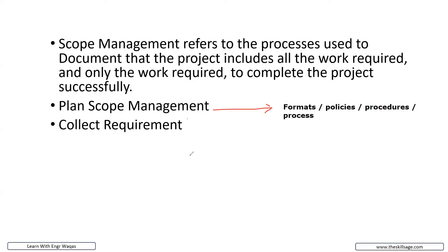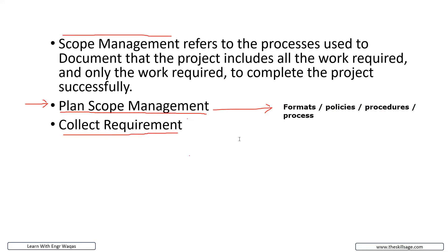I'm explaining these processes because scope management means to write your project — what you need to conduct on the site area — and how you are going to collect all those things. Your company carries this document before starting every project. The next process is Collect Requirements, in which you are going to deal with your design engineers, quantity surveyors, and contract engineers.